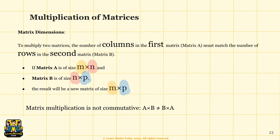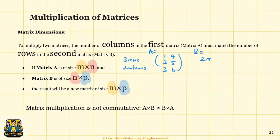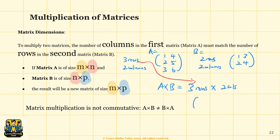Let's do an example. If we have matrix A with three rows and two columns, and matrix B with two rows and two columns, when we multiply them we will get a matrix of three rows and two columns. We now have to figure out what the missing question marks represent.